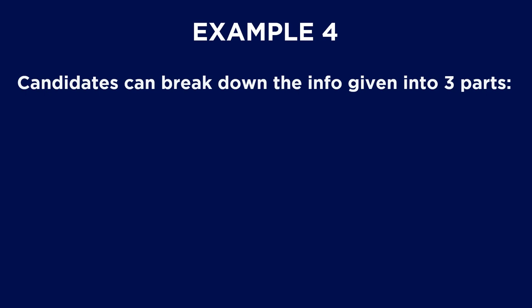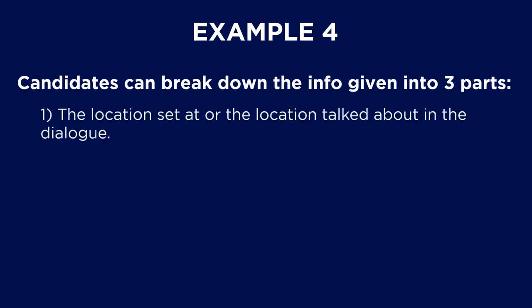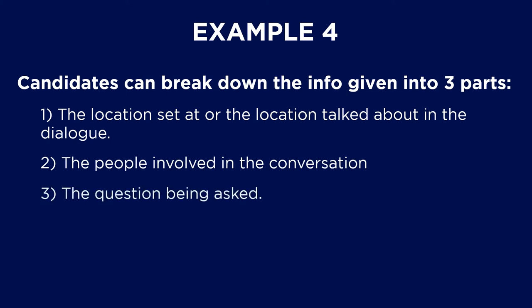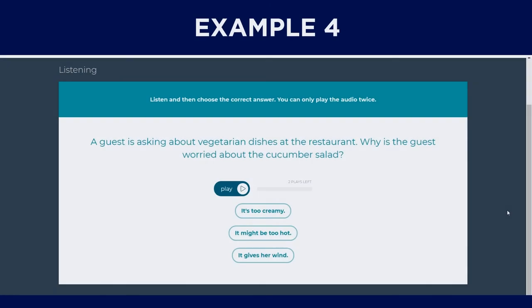From this question, candidates can break down the info given into three parts: the location set at or the location talked about in the dialogue, the people involved in the conversation, and the question being asked. So the location set at or the location talked about in the dialogue, from this question you would have expected the scene to be set in a restaurant. The people involved in the conversation, the guest is asking about vegetarian dishes, so we could assume that the guest is still looking at the menu and is having a conversation with the waiter or waitress.